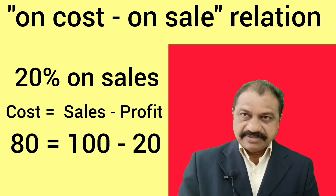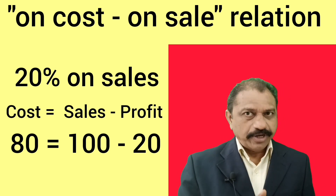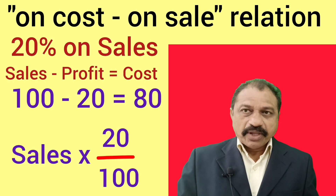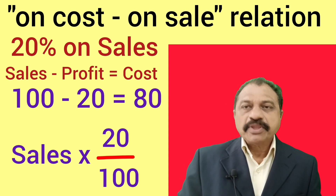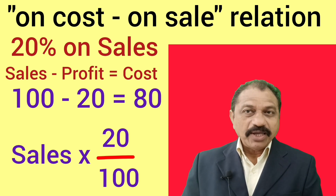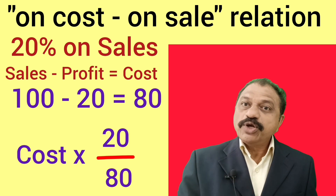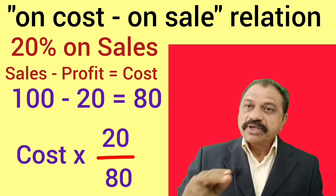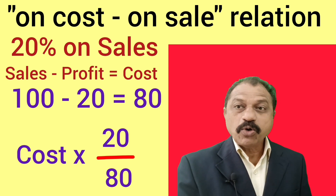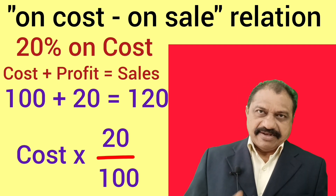In connection with this, you have to remember two important points. Point number one: profit is 20% on sales — if sales is given in the problem, then profit is equal to sales multiplied by 20 divided by 100. Point number two: profit is 20% on sales — if cost is given in the problem, then profit is equal to cost multiplied by 20 divided by 80.